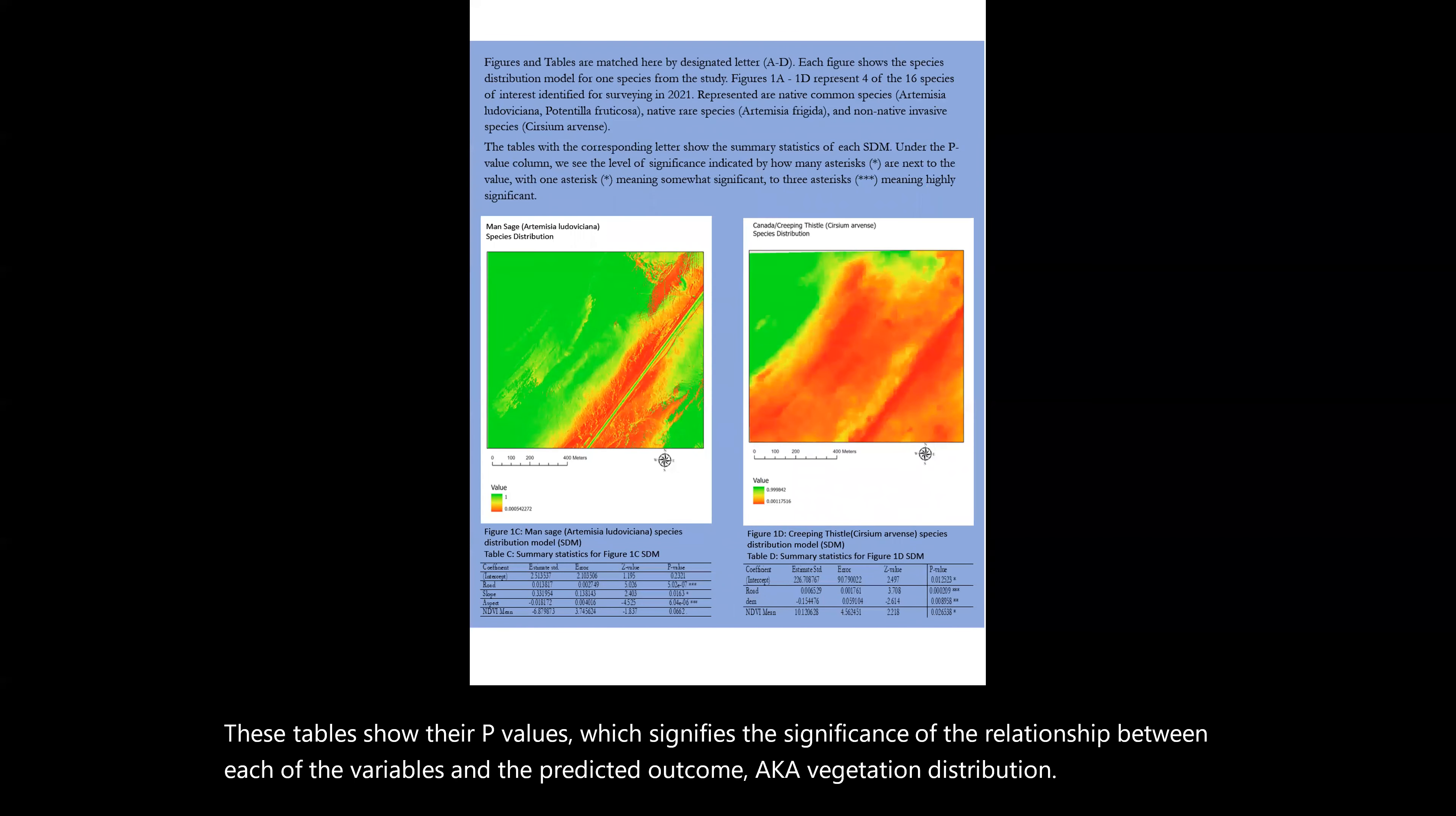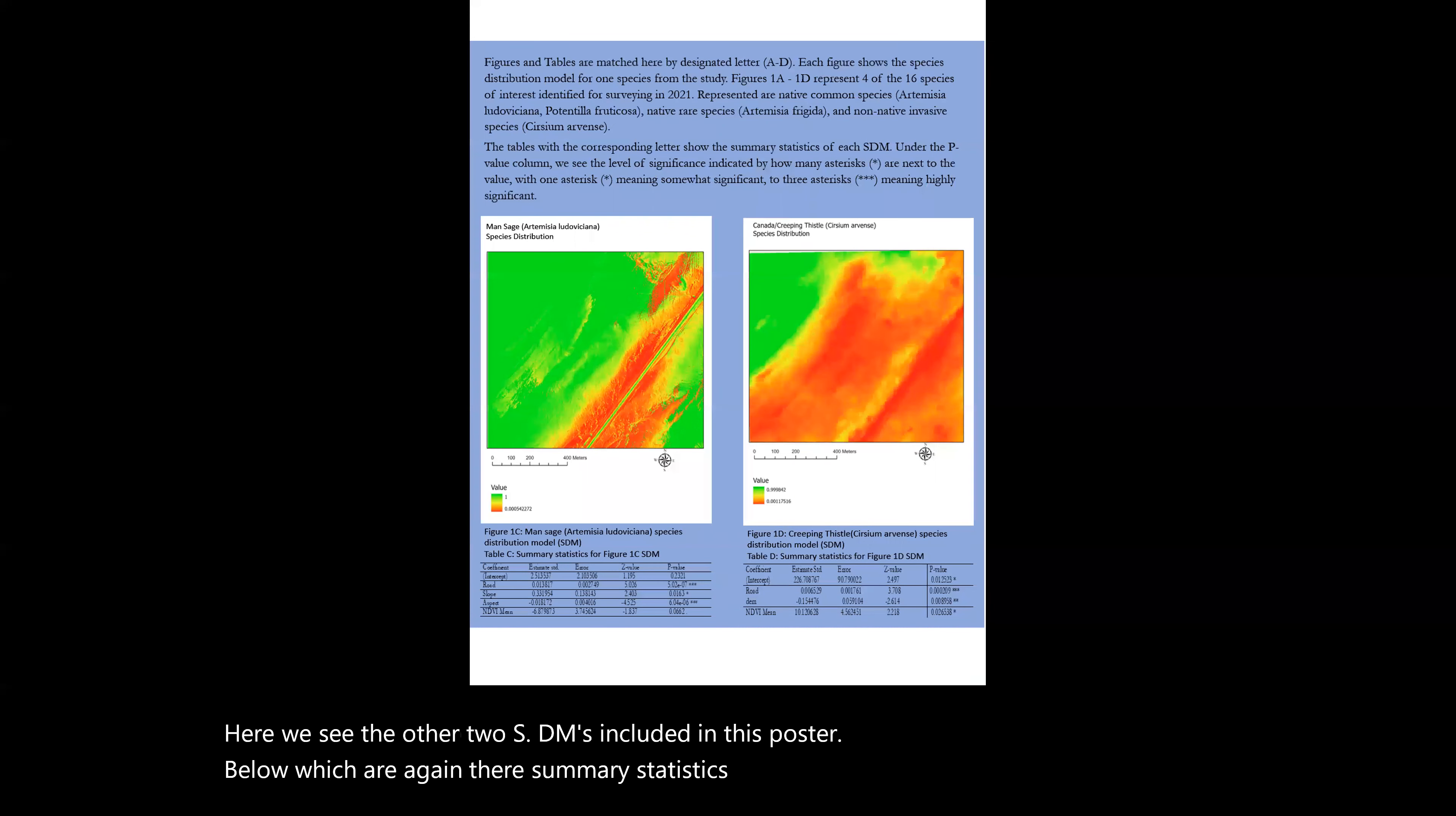Here we see the other two SDMs included in this poster, below which are, again, their summary statistics within the table. Each of those summary statistics shows an asterisk next to the p-value, however many of those asterisks indicates how significant the result. One meaning somewhat significant, and three meaning highly significant.